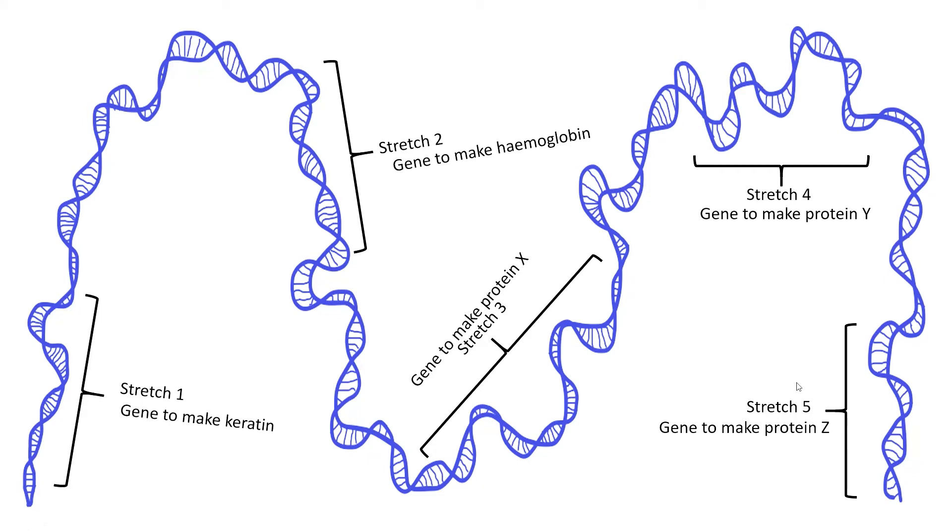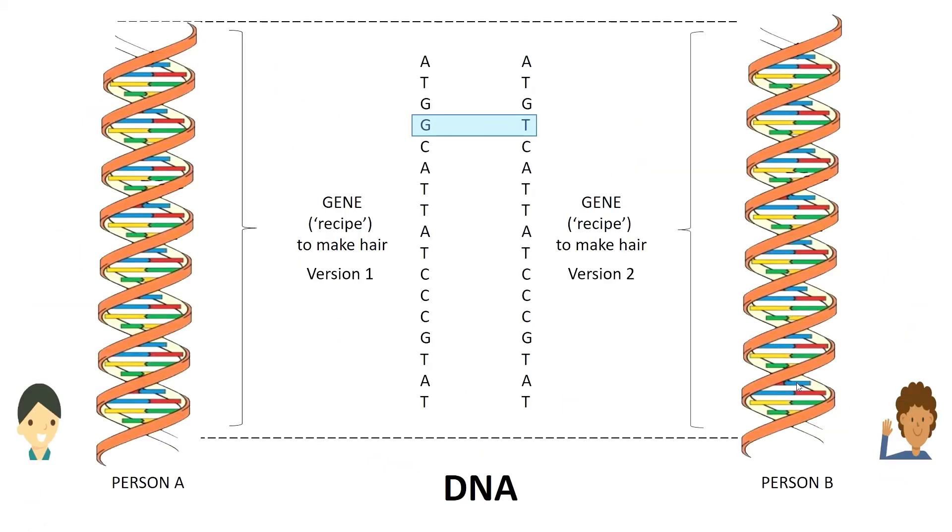Recall from the previous video that a particular gene or recipe can have several different versions. These different versions of a particular gene are known as alleles.